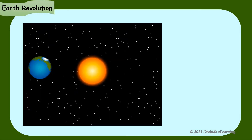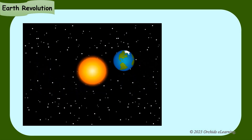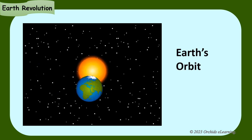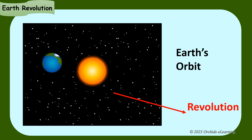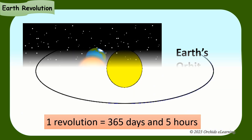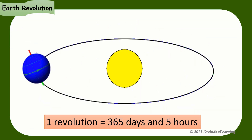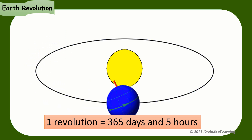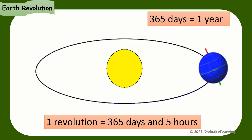The Earth moves around the Sun in a fixed path called the Earth's orbit. The movement of the Earth around the Sun in an orbit is called revolution. The Earth takes about 365 days and 5 hours to complete one revolution. 365 days makes a year.